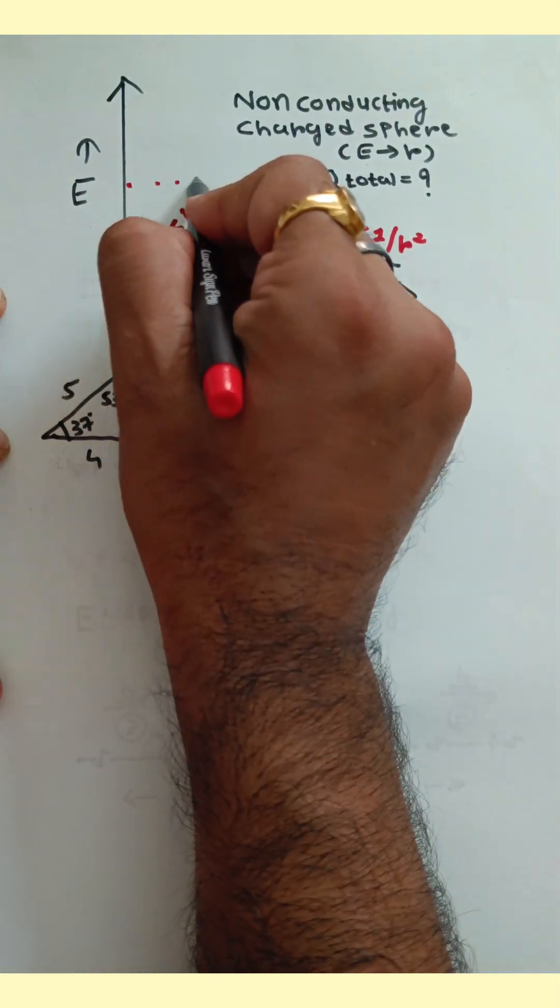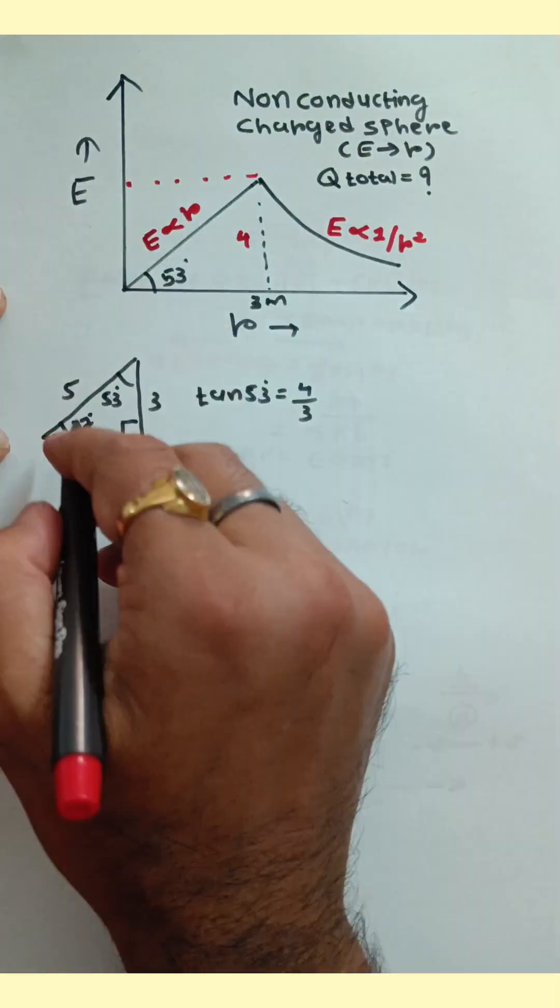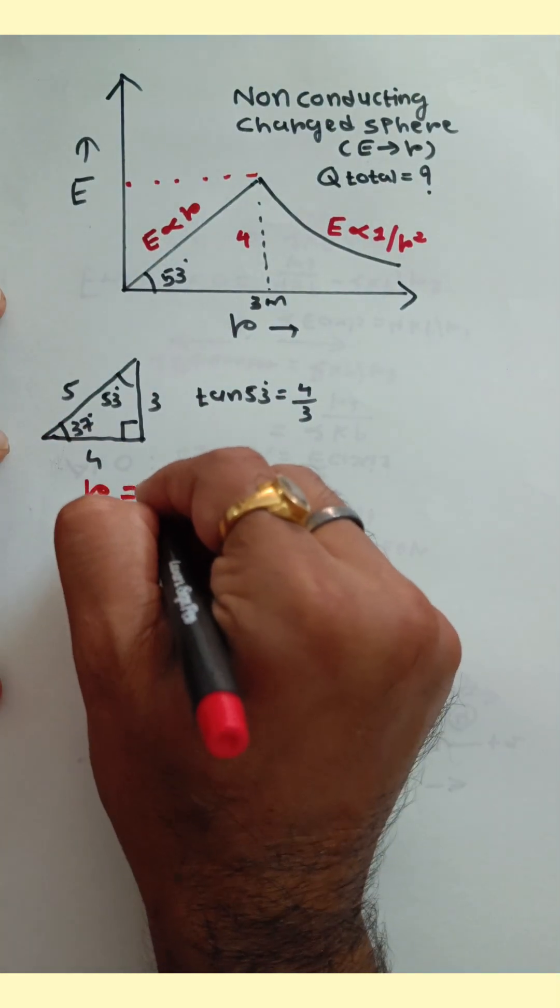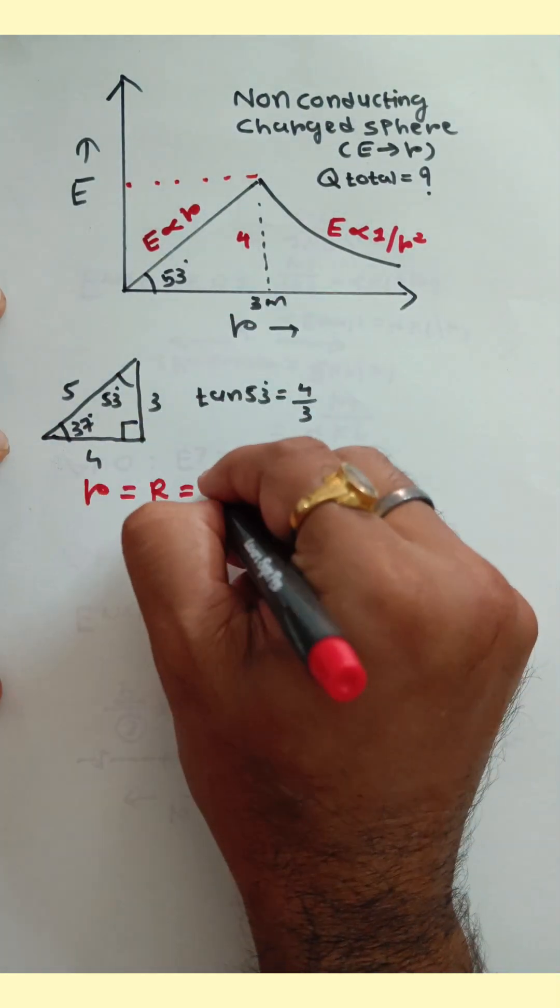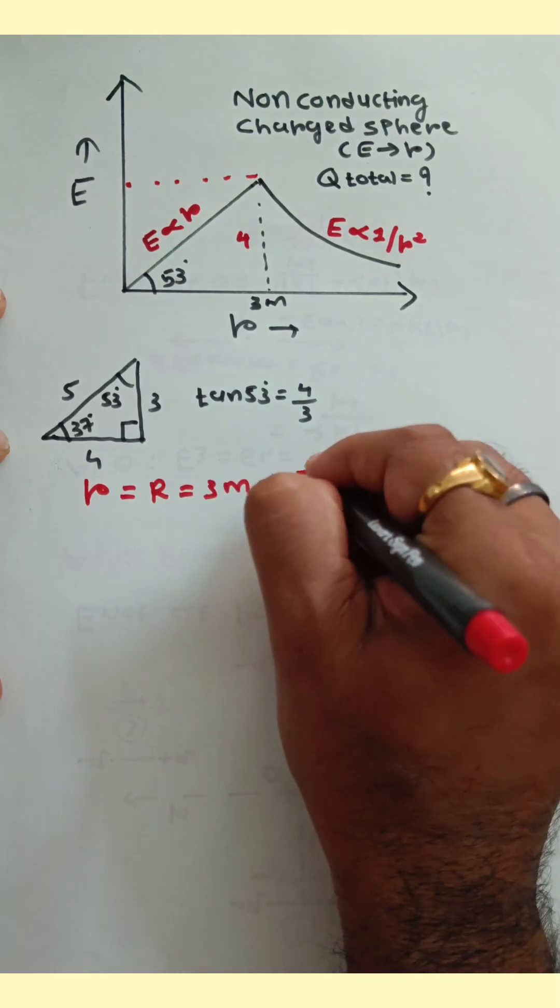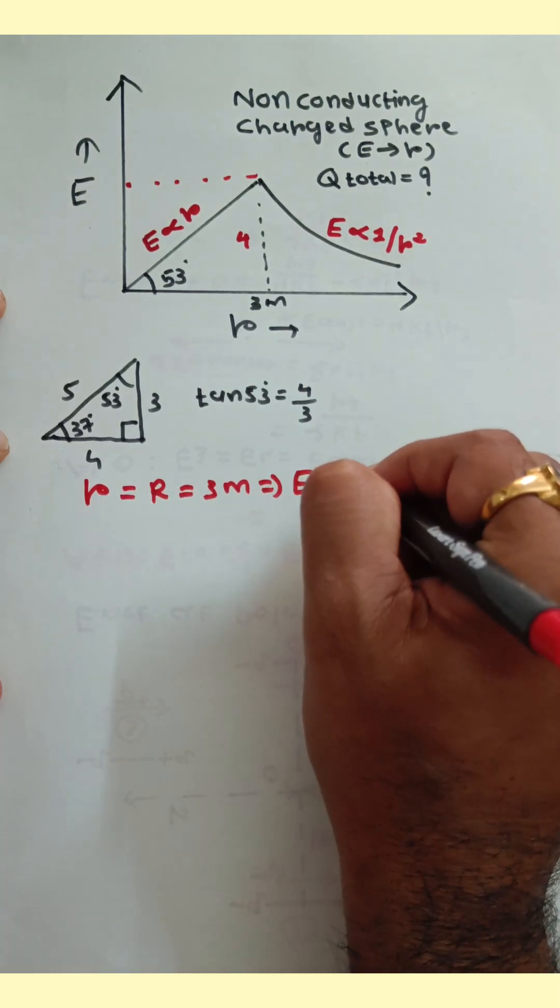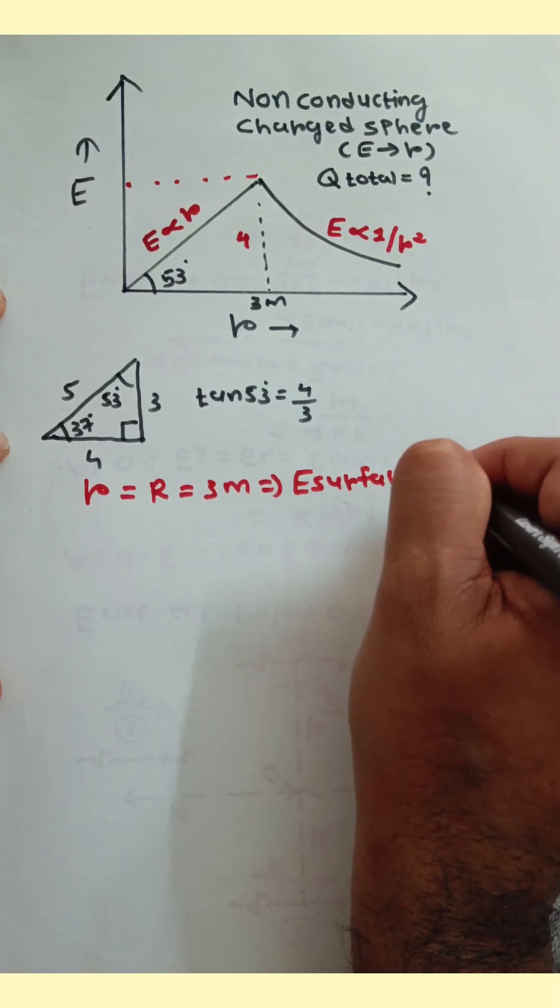It means the intensity of electric field is here 4 units. So when small r is equal to the radius of the sphere, 3 meters, then the intensity on the surface is 4 units.